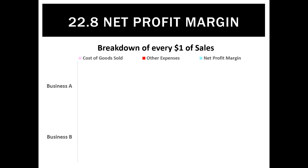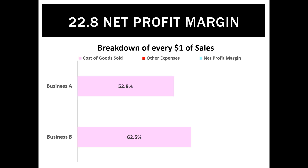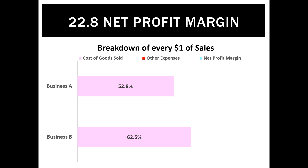Looking at two businesses and how to compare them: Business A only has cost of goods sold of 52.8%, whereas Business B has 62.5%. So looking at that graph, Business A does a better job of buying stock and selling it at a profit — they either have a bigger markup or they're buying cheaper stock. Business A clearly has a bigger gross profit margin, but we don't take home gross profit — we finish with a net profit.